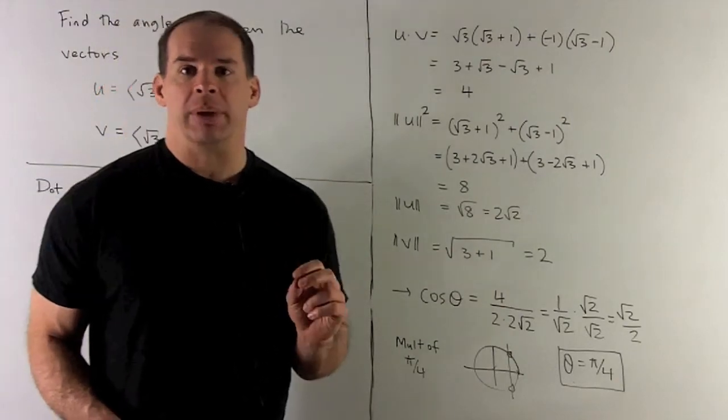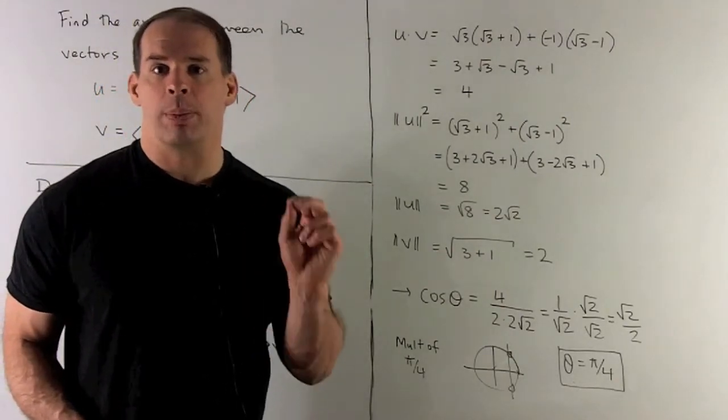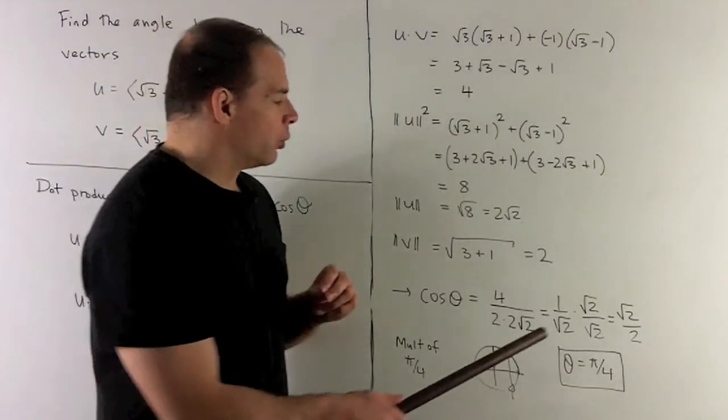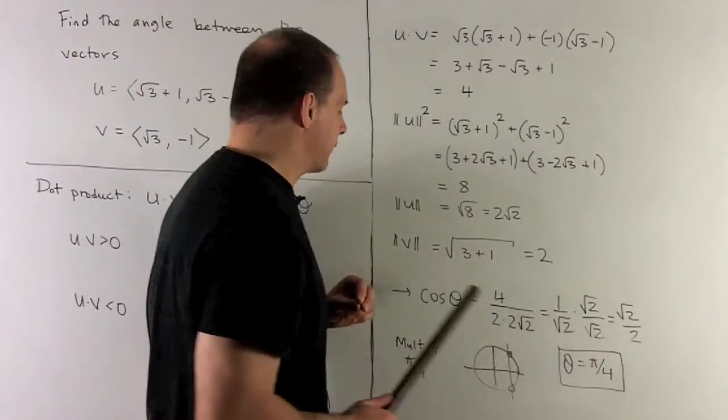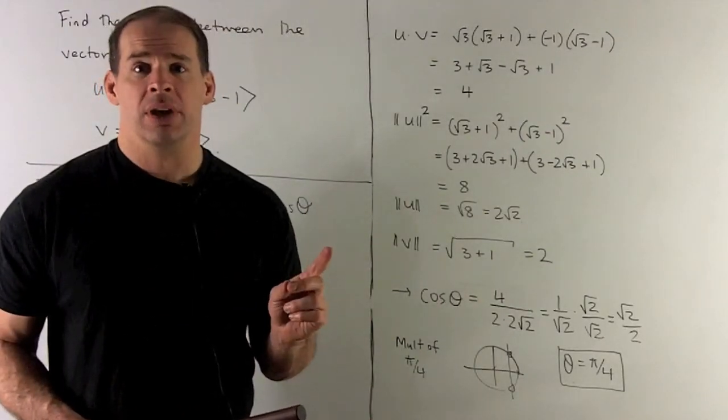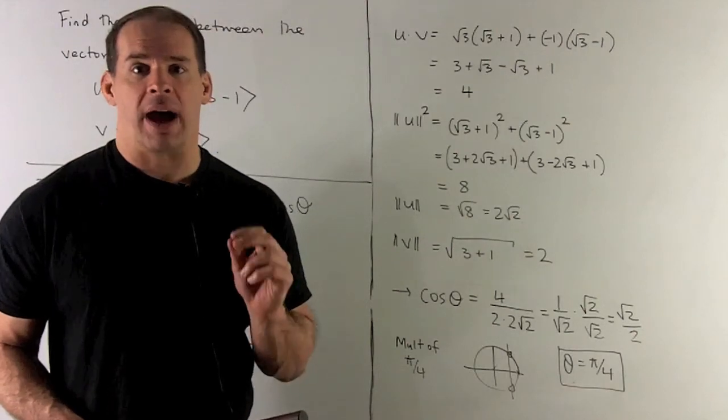So our angle is going to be a multiple of 45 degrees or π/4. Since we have positive coming out for cosine, this is the angle between 0 and 90 degrees, so it's 45 degrees or π/4.